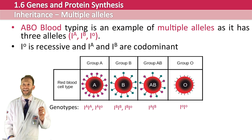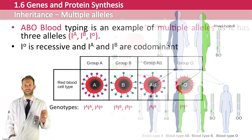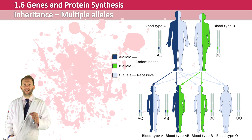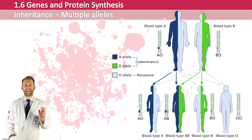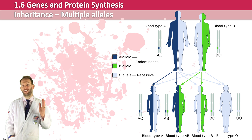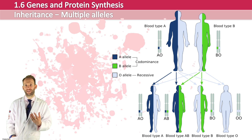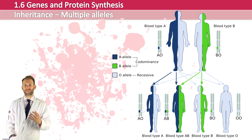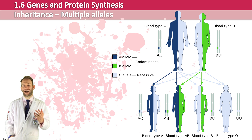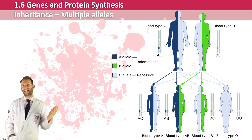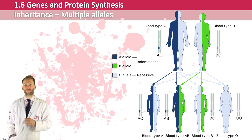Therefore, if you have heterozygous parents — one heterozygous for type A and one for type B — they could actually have offspring with any of the four blood types. This diagram shows that both parents carry IO because they're heterozygous: one has IA and one has IB, and therefore any combination is possible from parents like that.